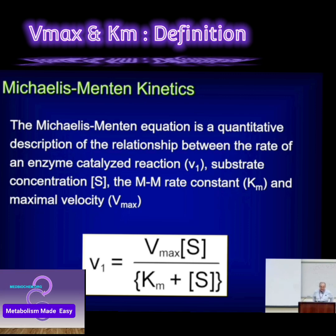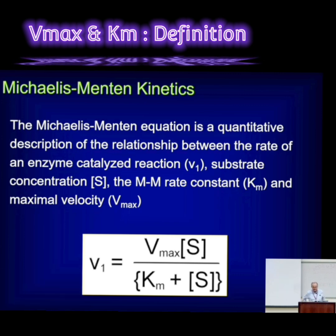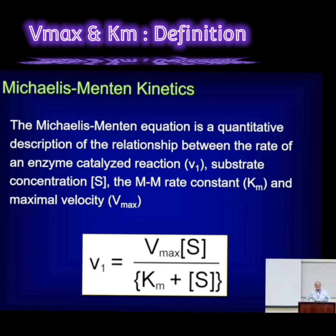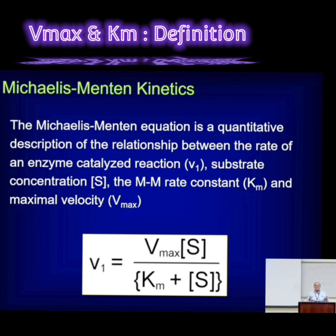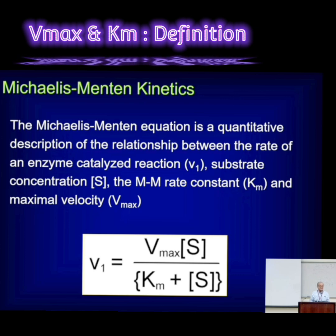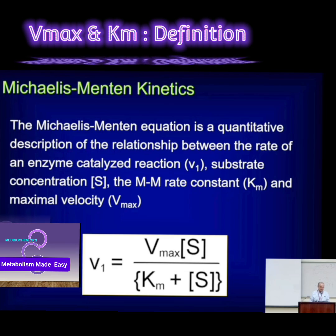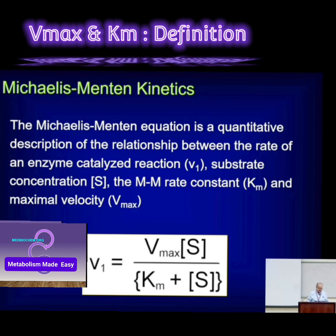The very important take-home lesson about Km — which I always say and half the class gets wrong on the test — is that Km is always a substrate concentration. When it's low, it tells you the enzyme has high affinity for its substrate. When it's high, it tells you the enzyme has low affinity for its substrate.